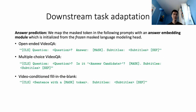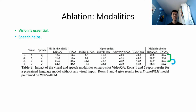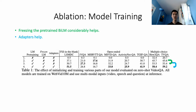Zero-shot inference is then enabled by formulating downstream tasks as masked language modeling problems. In each prompt, a masked token is mapped to an answer in the target vocabulary by leveraging the frozen masked language modeling head. The resulting model can perform multimodal zero-shot reasoning using question, visual, and speech inputs. We find that freezing the pre-trained bidirectional language model, combined with training adapters, is key to the zero-shot performance.